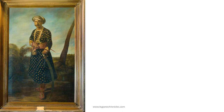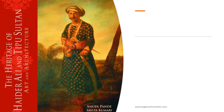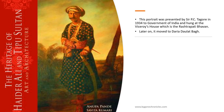We next looked at this large portrait of Tipu Sultan seen at his summer palace in Seringapatam, the Darya Daulat Bagh, which is on the Ganjam site and put up by the Archaeological Survey of India in his palace. The image is also found on the cover pages of many books on Tipu Sultan, Mysore, and Seringapatam. A lot of people think this is how Tipu looked when he was young. The image is attributed and said to have been painted by Johan Zoffani in 1780, with a reference for this in the book The Heritage of Hyder Ali and Tipu Sultan: Art and Architecture. This portrait was presented by Sir P.C. Tagore in 1934 to the Government of India and hung at the Viceroy's house, which is the Rashtrapati Bhawan, and later moved to Darya Daulat Bagh.